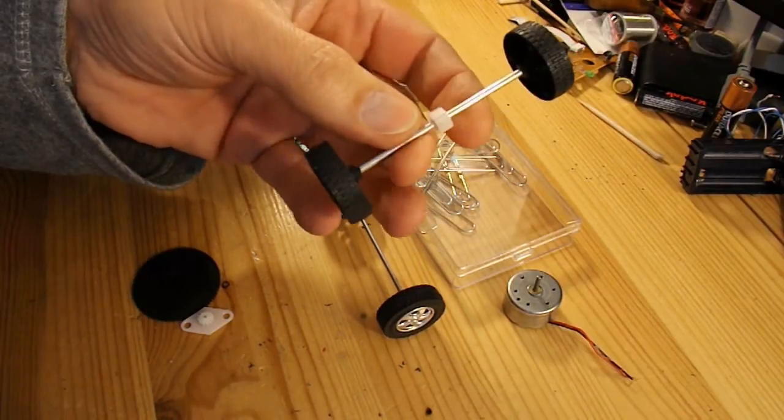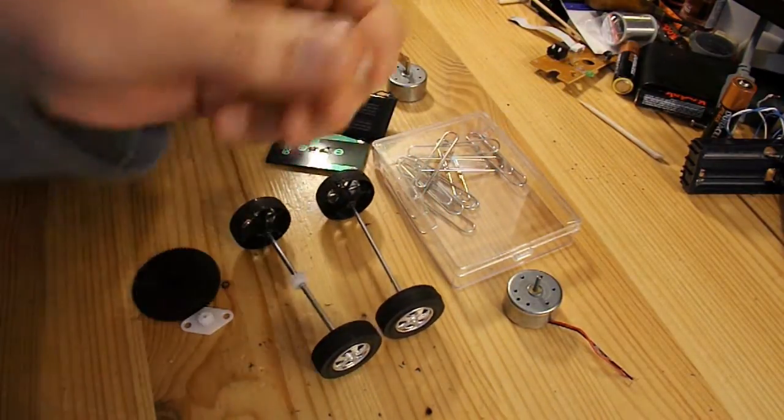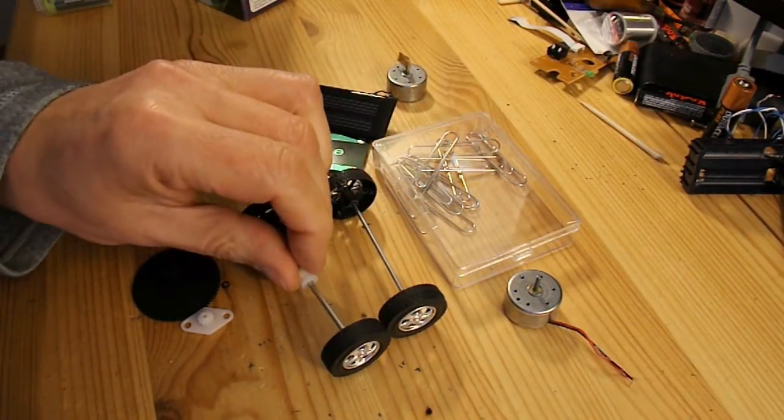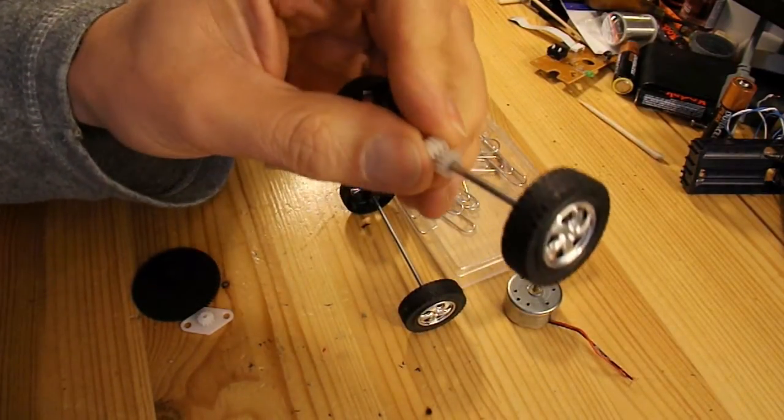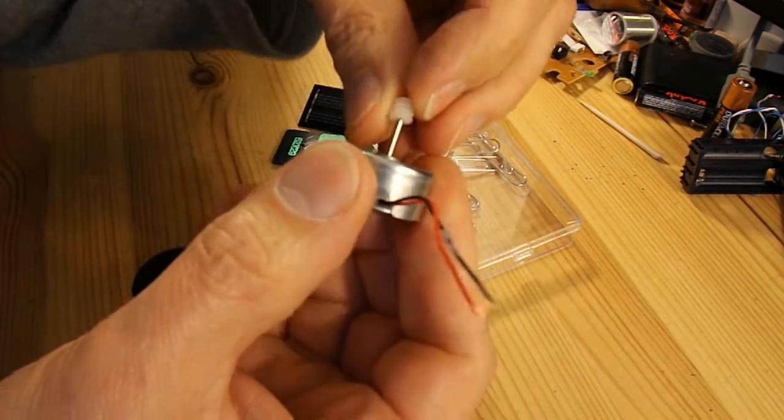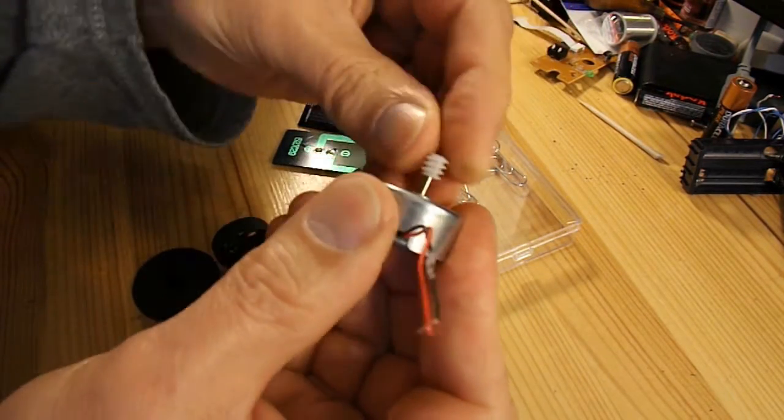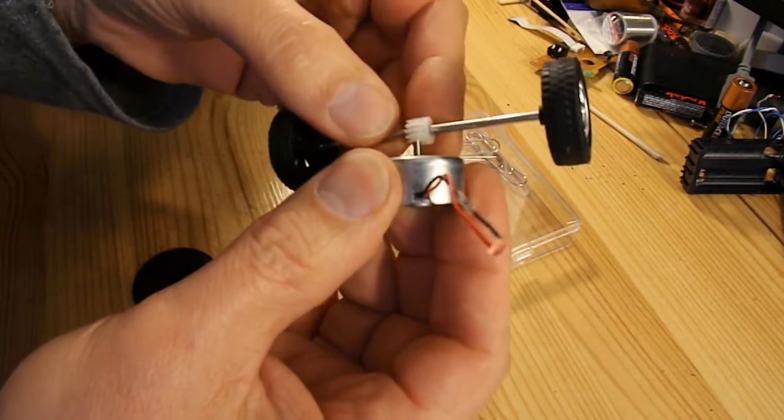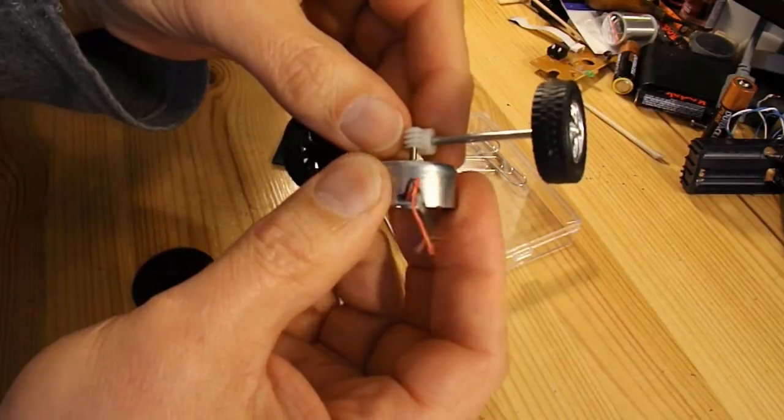That one's got a gear on it, which is handy. And I've also found a little worm gear that goes with it, and that just happens to be the right size to go on that shaft. A bit of a push. So I should be able to drive that gear with it.